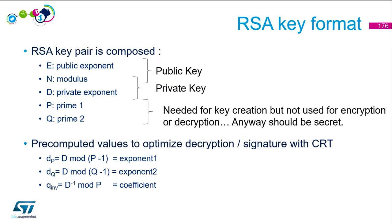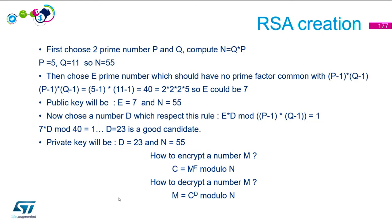Here is a reminder about RSA theory. You have the key format, which is standard. If you are not familiar with the Chinese Remainder Theorem, the required parameters are computed from the primary key values. If you are using OpenSSL to generate an RSA key, you will see those values pre-computed in the generated key, which can be quite useful. This also shows an example of how to create an RSA key and how to encrypt and decrypt.